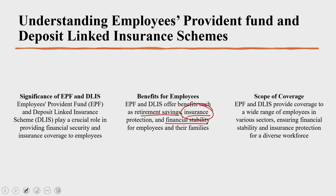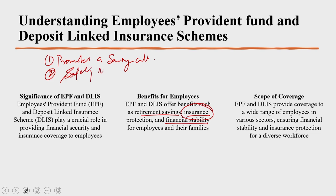When you look into the significance of EPF, I would like to mention three important things. One is it certainly promotes a culture of saving. Second, it acts as a safety net, which I have underscored in the previous lecture also. And finally, it is an instrument — historically and presently — of financial stability. These are the three important significances of EPF and DLIS.